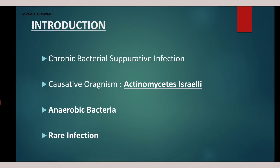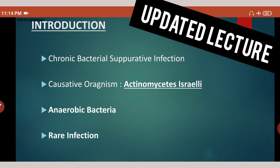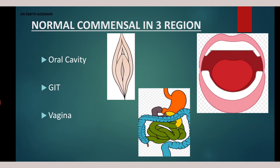So let's begin with the introduction. What is actinomycosis? This bacterial infection is caused by an organism known as Actinomyces israelii — that is the causative organism. It's an anaerobic bacteria and this infection is very rare; it's not a common infection. Actinomycosis is an anaerobic chronic bacterial suppurative infection. You have to remember that it's a bacterial infection, not a fungal infection, which is a common misconception.